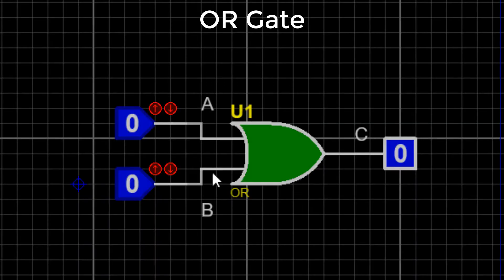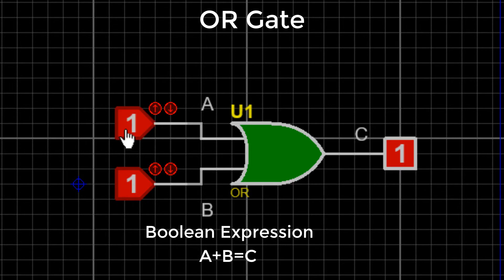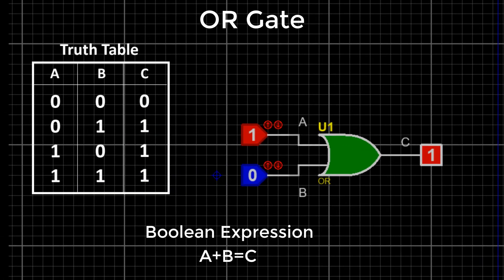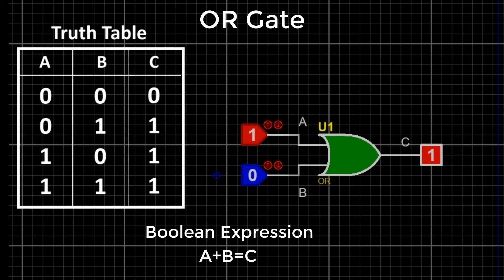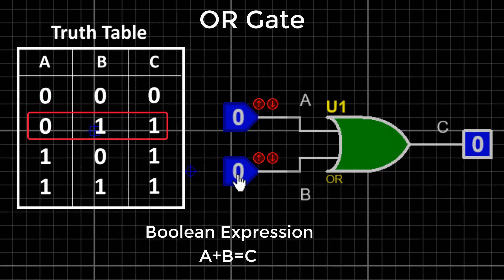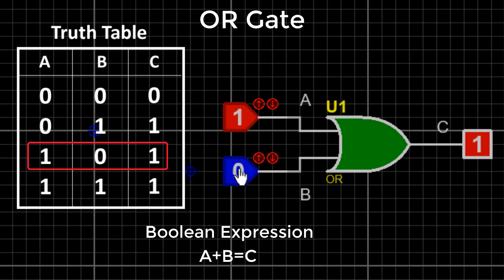OR gate: The OR gate is an electronic circuit that gives a high output — one — when any of its inputs is high. In boolean expression, the plus sign is used to show the OR gate operation — for example, A + B = C. You can see its symbol and truth table on the screen.